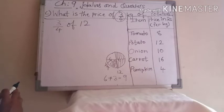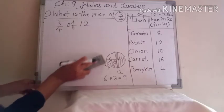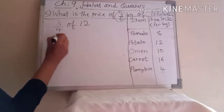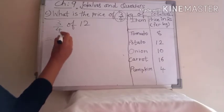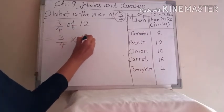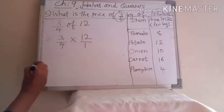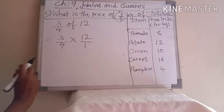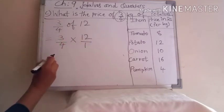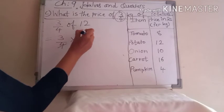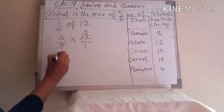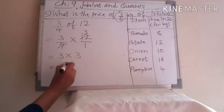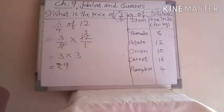Now let's solve with the method. Write: 3/4 of 12, then put equal to sign, write 3 upon 4, then multiply 12. In the 4 table: 4 threes are 12, so you write 3 here. Both 3s are in the numerator — 3 threes are 9. So 3/4 kg potato price is rupees 9.